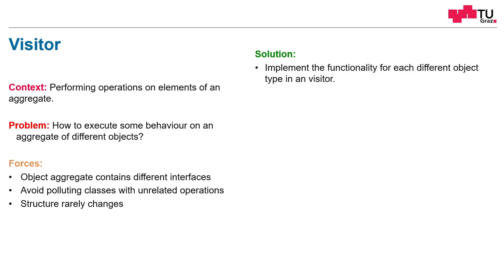The solution is now to implement the functionality for each different object type in a visitor. We pack together related functions in a visitor and implement a different method for each different type of object. Then we have to implement means how to apply the visitor to every object. We have seen the double dispatch method with this accept and visit methods, but you can think of different ways also.